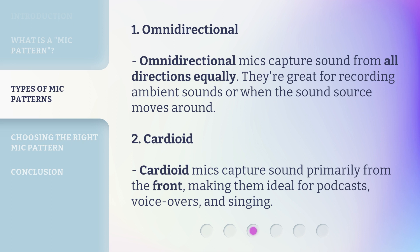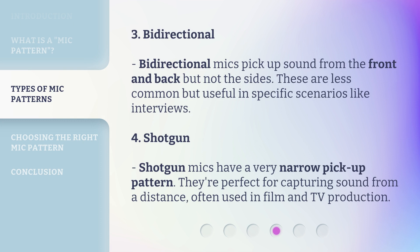Cardioid. Cardioid mics capture sound primarily from the front, making them ideal for podcasts, voiceovers, and singing. Bi-directional. Bi-directional mics pick up sound from the front and back but not the sides. These are less common but useful in specific scenarios like interviews.